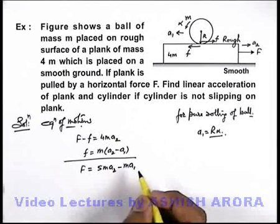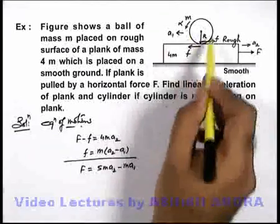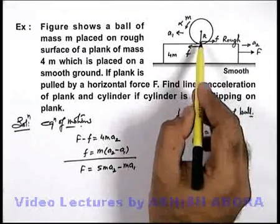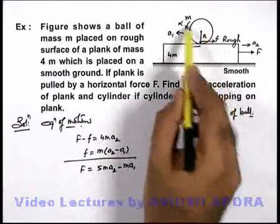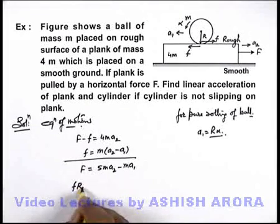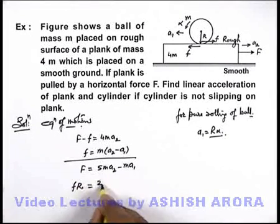And if I write the equation of rotational motion for this ball, the only force acting on it is friction, and torque of which is providing the angular acceleration. So I can write f times r equals I alpha, which I can write as 2/5 m r squared, and alpha I can write as a1 by r.